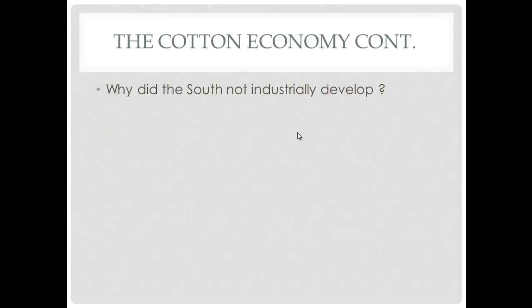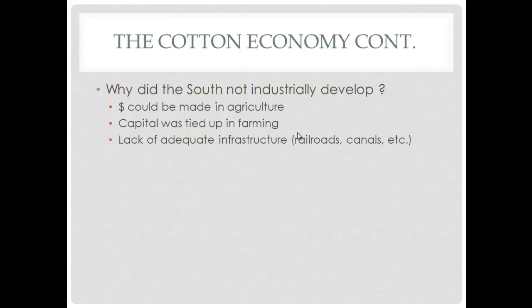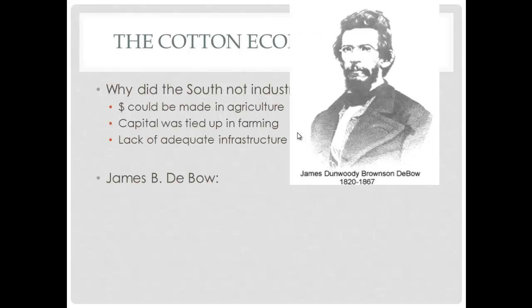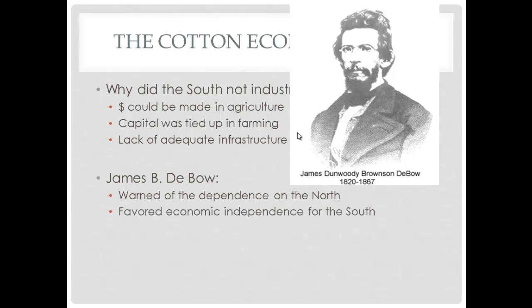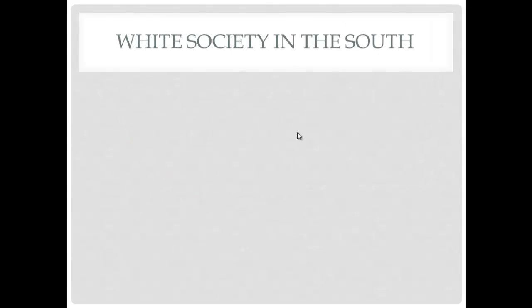Why did the South not industrially develop while the North got all the industry? There was lots of money to be made in agriculture, the climate and terrain favored farming, and many Southerners had capital tied up in farming through slaves and machines. There was also a lack of adequate infrastructure — railroads, canals, roads. James B. DeBow warned of the South's dependence on the North and called for Southern economic independence.